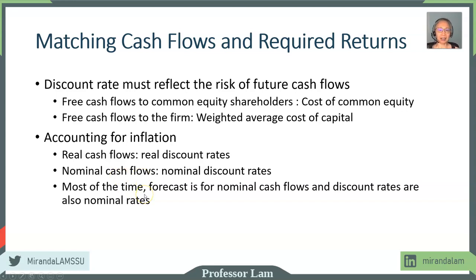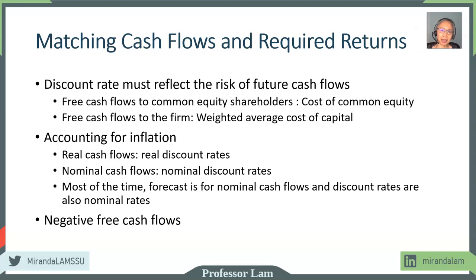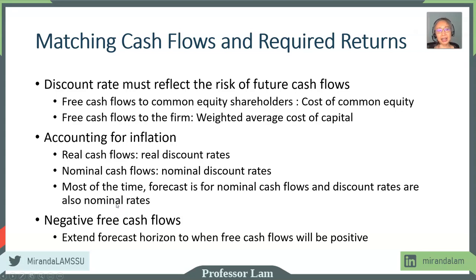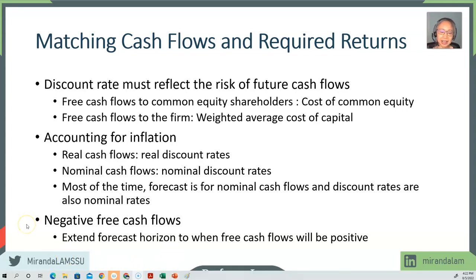I would say 99% of the time, forecasting is done using nominal cash flow, so we should use a nominal discount rate — that's the majority of cases. One thing to consider is what happens if cash flow is negative. Dividends will seldom be negative, but cash flow can be. If that happens, we will have to extend our forecast horizon to when the cash flows become positive. Otherwise, it's not a valuable investment.